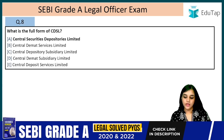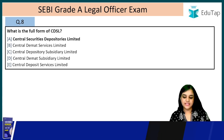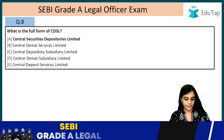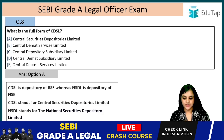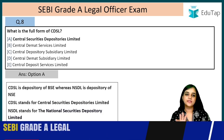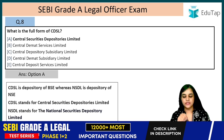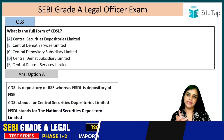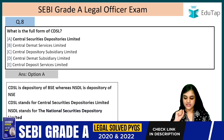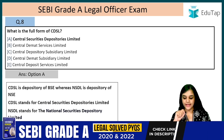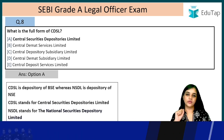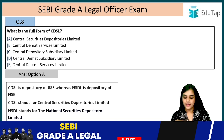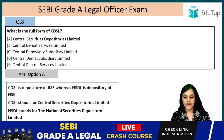Question 8: What is the full form of CDSL? CDSL is a depository of BSE, and NSDL is a depository of NSE. CDSL stands for Central Securities Depositories Limited, and NSDL stands for National Securities Depository Limited. CDSL is the depository of BSE and NSDL is the depository of NSE.